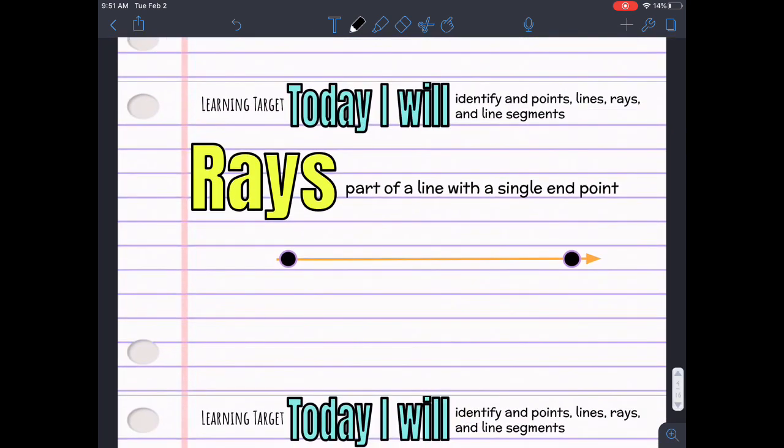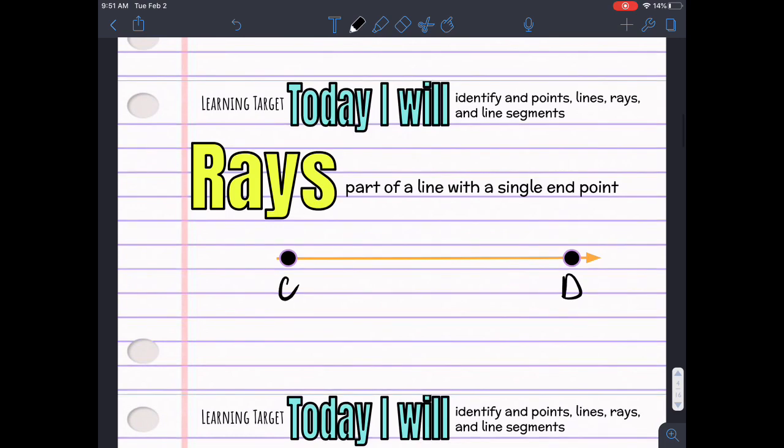Rays. Ray is part of a line with a single end point. So, if we have this here, CD, Ray CD, it stops here.